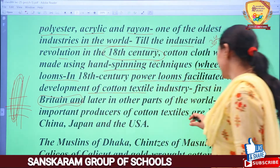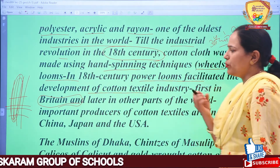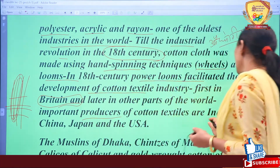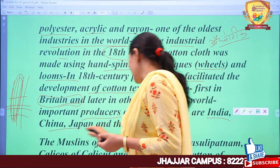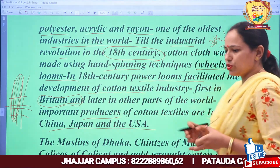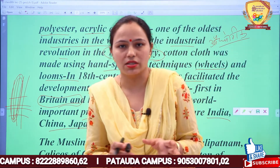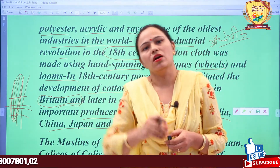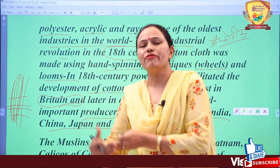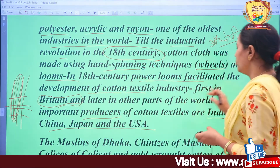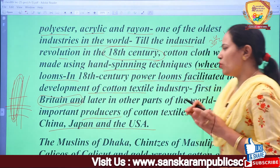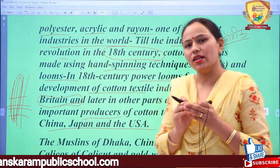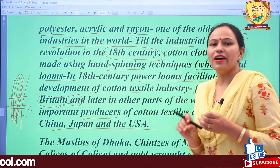Important producers of cotton textiles are India, China, Japan, and the USA. To summarize what we have discussed about the cotton textile industry: we discussed fibers - natural fiber and man-made - and then the major producers of cotton textile, which are India, China, Japan, and the USA.